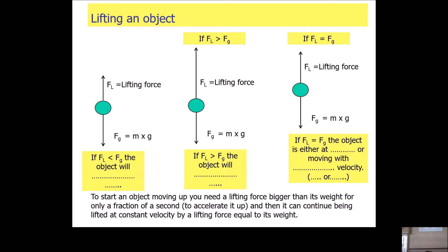If you've got a lifting force applied to an object and the force of gravity on it — if your lifting force is lower than gravity, the object will accelerate downward because there's an unbalanced force downward. If the upward force is bigger, it accelerates upward. If the forces are equal, the object can be stationary or moving up or down at constant velocity.